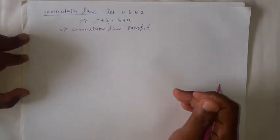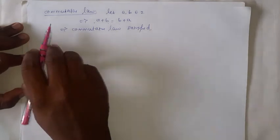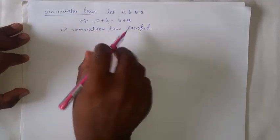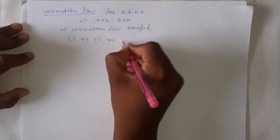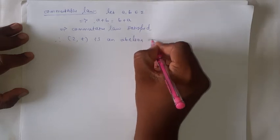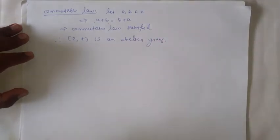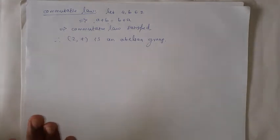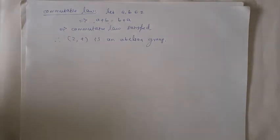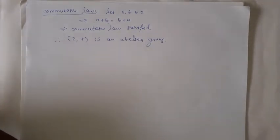Here all four laws are satisfied, so (Z, +) is a group. Along with those four laws, the Commutative law is also satisfied for Z. Therefore, (Z, +) is an Abelian group. In conclusion: if Z satisfies only four properties, then it is simply a group. When those four properties plus the Commutative law are satisfied, then we can say that the given set is an Abelian group with respect to the same binary operation.